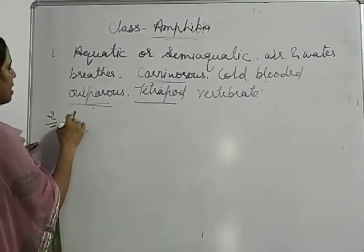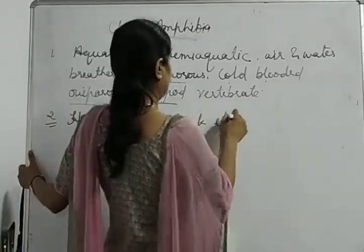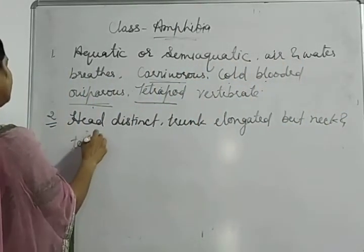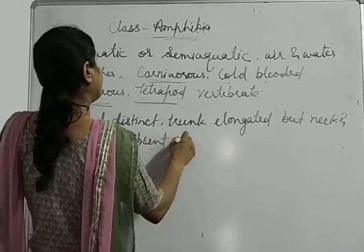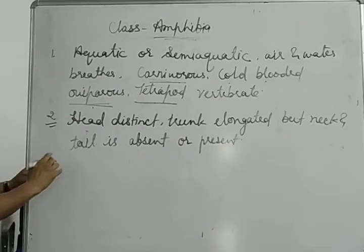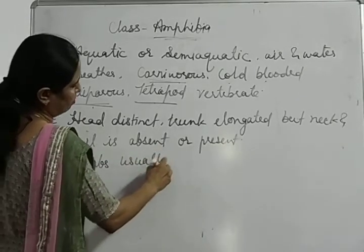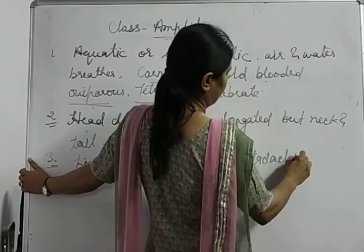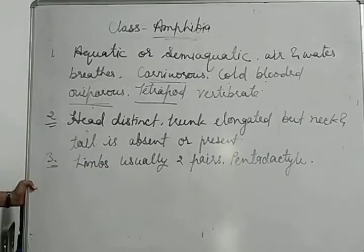Head is distinct, trunk is elongated, and neck is absent. Tail may be present or absent. Limbs are usually two pairs, pentadactyl. In contrast to superclass Pisces where two pairs of pectoral and pelvic fins were present, in amphibians paired fins are absent. Median fin may be present but without fin rays.